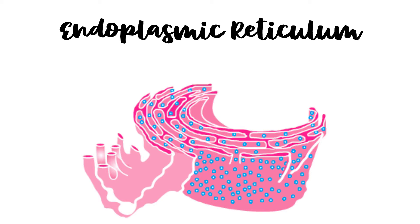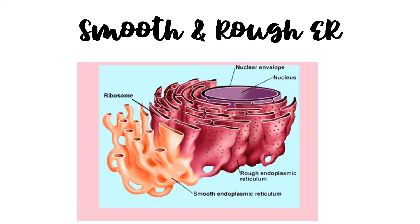We have already discussed nucleus, mitochondria, ribosomes, and plastics. Moving on to the next organelle, which is the endoplasmic reticulum. Endoplasmic reticulum is basically a network of interconnected channels that extend from the cell membrane to the nuclear envelope. This network exists in two forms: rough endoplasmic reticulum and smooth endoplasmic reticulum.